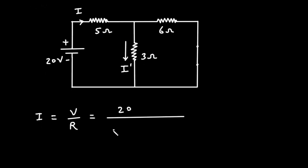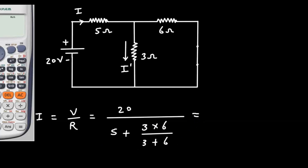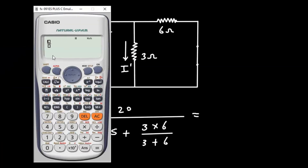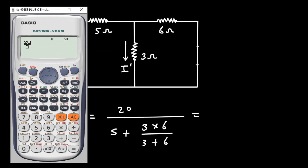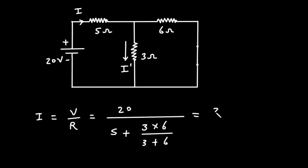This current is equal to V over R. The voltage value is 20V and for the resistance, we take the whole resistance: 5 Ohm plus the parallel combination of 3 Ohm and 6 Ohm, which is 3 × 6 divided by 3 + 6. So the main current is 20 divided by (5 + 3×6/(3+6)), giving us 20/7 ampere.